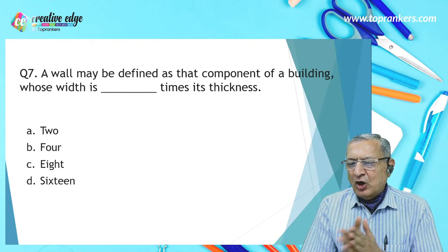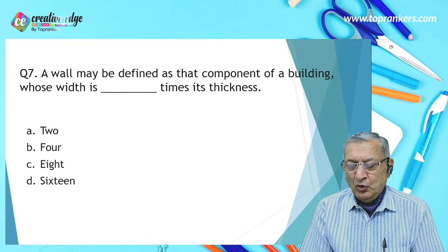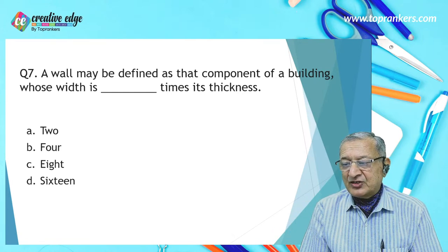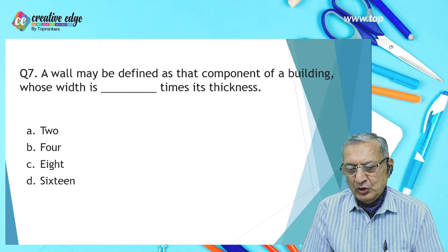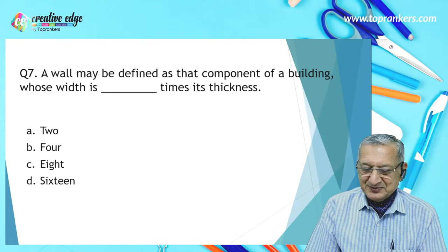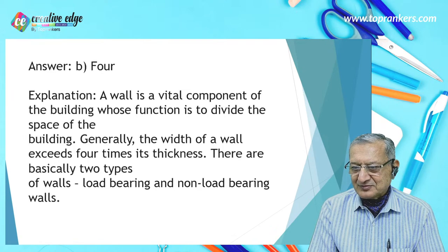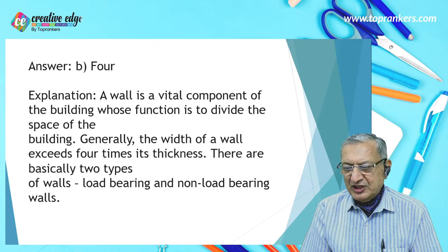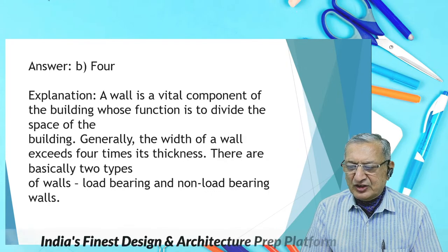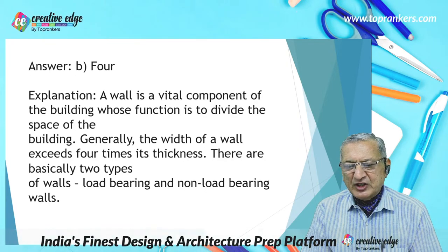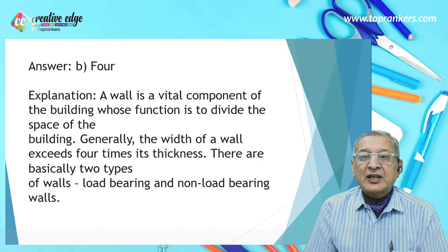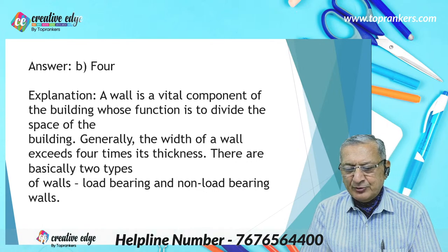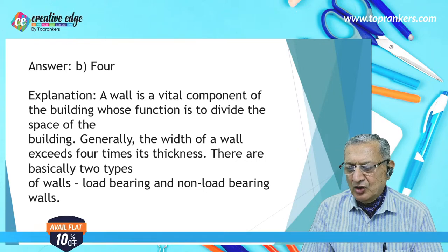A wall may be defined as a component of a building whose width is at least how many times its thickness — 2, 4, 8, or 16? The answer is four. A wall is a vital component of a building whose function is to divide space; generally the width of the wall exceeds four times its thickness. There are basically two types of walls: load-bearing and non-load-bearing walls.